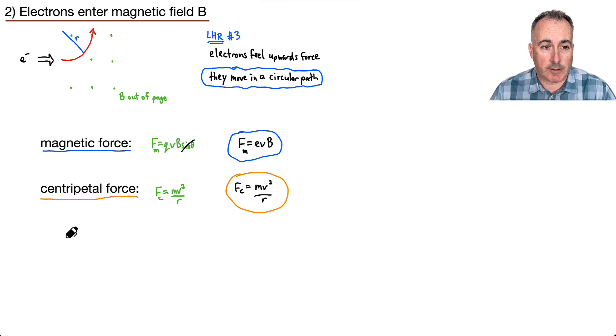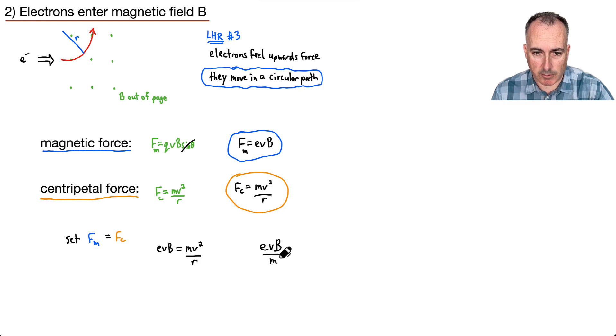So eVB equals m v squared over r. But if I'm looking for the charge-to-mass ratio, I'd better do e over m. I'm going to divide both sides by m, so eVB over m equals v squared over r. But I can keep going.